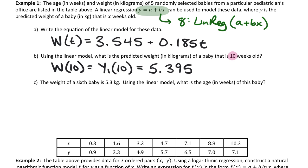Part C says the weight of a sixth baby is 5.3 kilograms. Using the linear model, what is the age in weeks of this baby? Did they give me an input or an output? Output. So I actually have to do some solving here, because I want my output to say 5.3, and I'm finding the input value that creates it. So I'm setting the equation equal to 5.3, and I'm going to solve for T. We subtract 3.545 from both sides, which would end up with 1.755 on the left-hand side, and 0.185 T on the right-hand side. We would get 9.4865 equal to T.